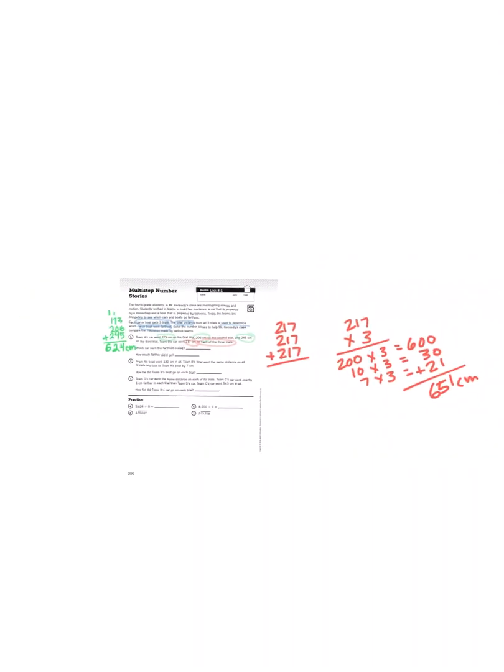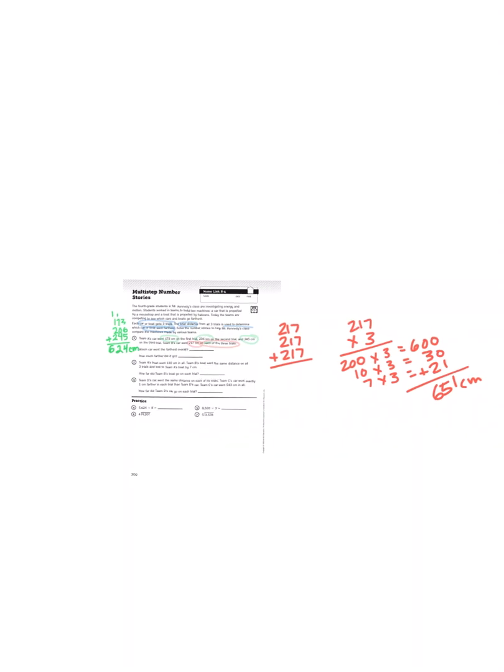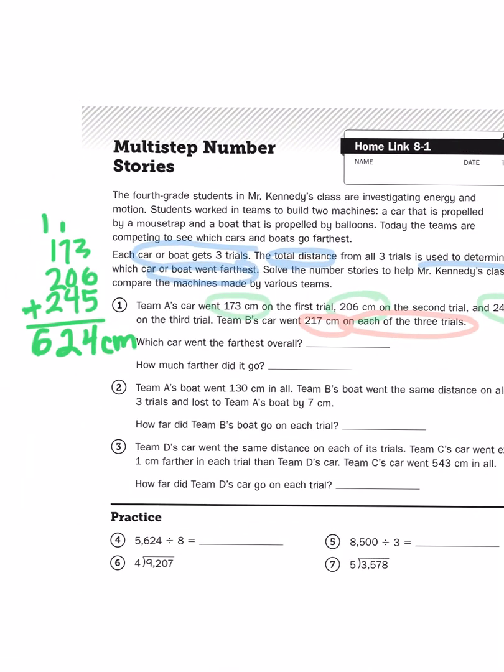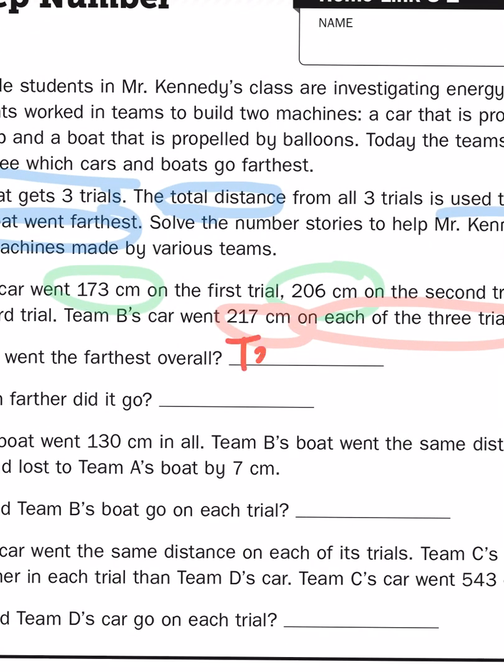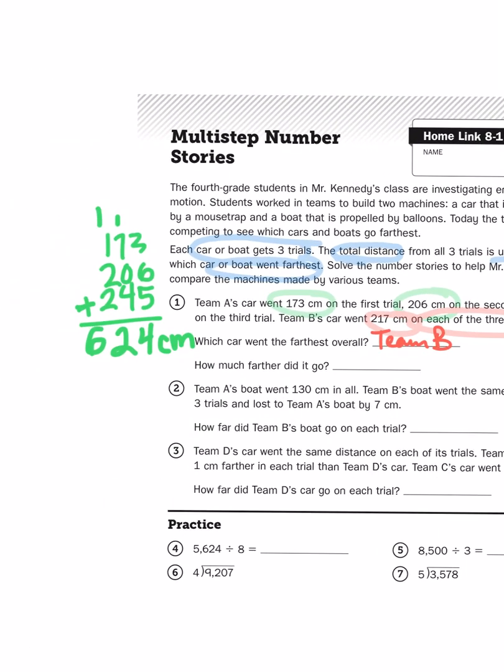Which is bigger than 624 centimeters. So, the question, which car went farthest overall? Well, that would be Team B. Then, the question becomes, how much farther did it go?